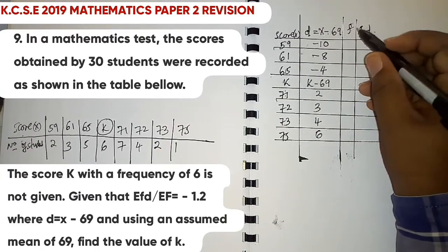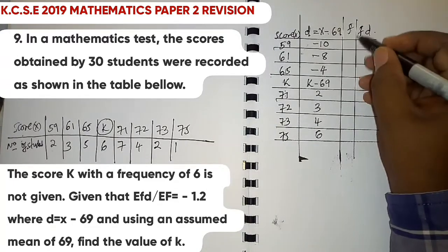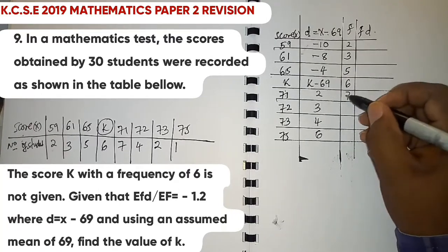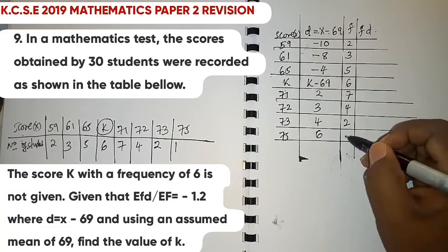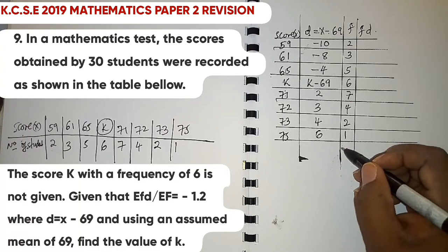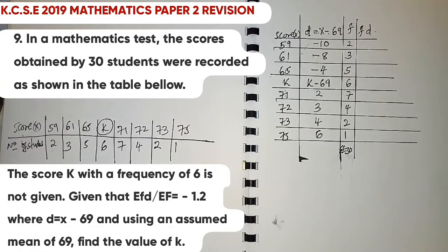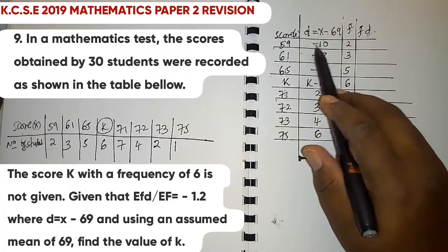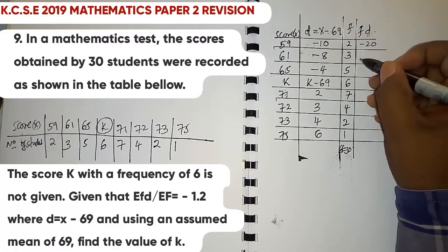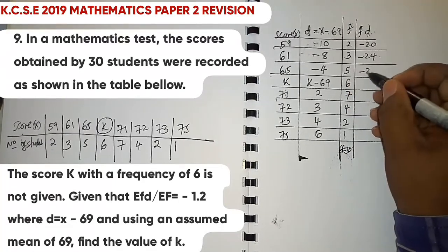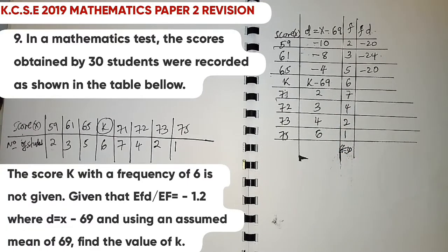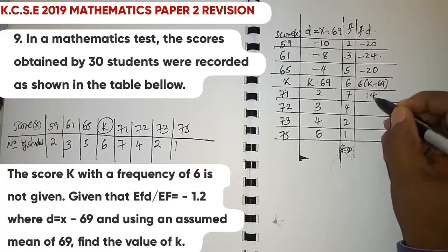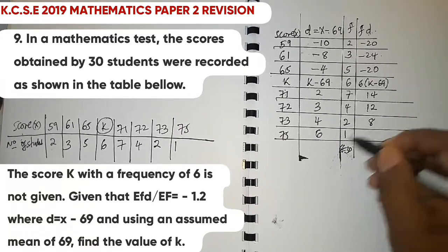The frequencies are 2, 3, 5, 6, 7, 4, 2, and 1 respectively, with total frequency 30. Computing fd: (-10)(2) = -20; (-8)(3) = -24; (-4)(5) = -20; (k-69)(6) = 6(k-69); (2)(7) = 14; (3)(4) = 12; (4)(2) = 8; (6)(1) = 6.